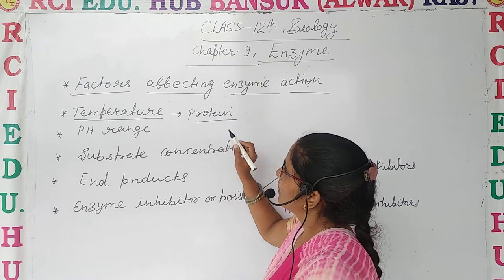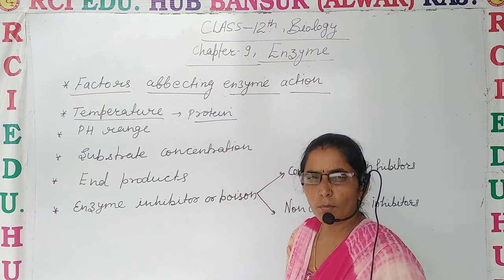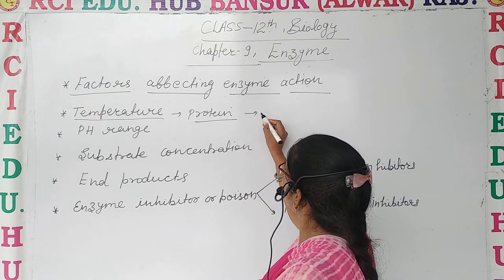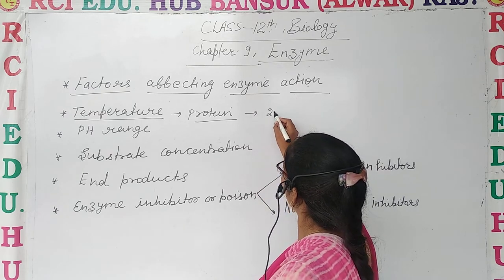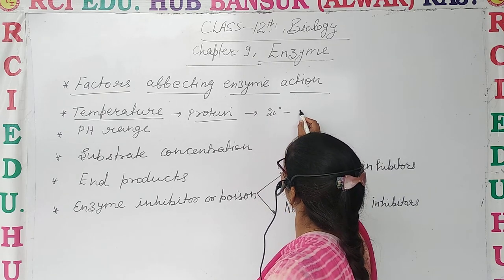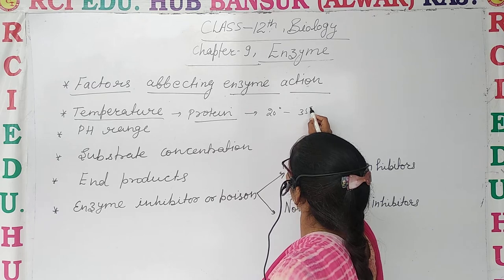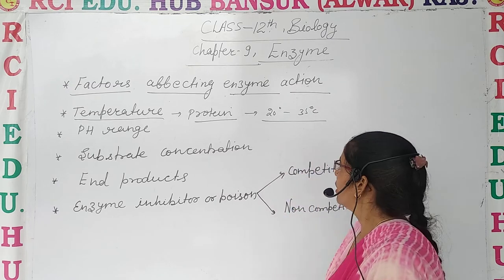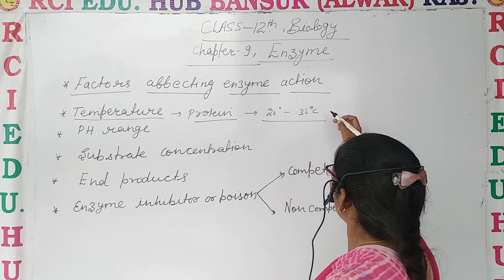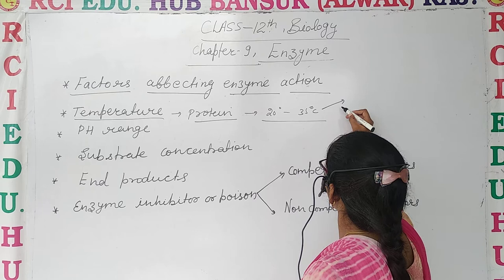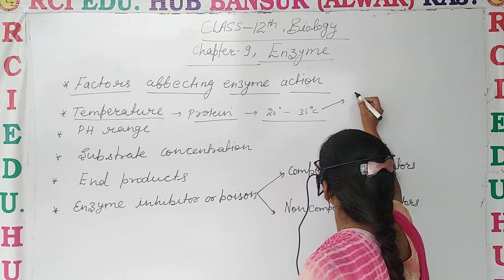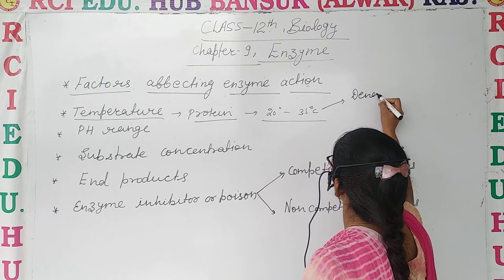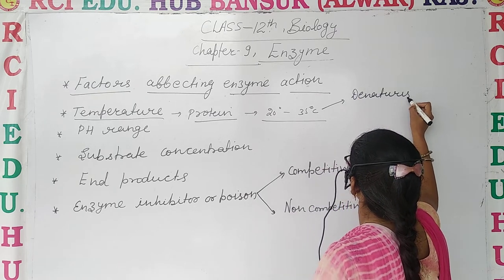Enzymes are highly sensitive to temperature as they are proteinous in nature — they consist of proteins. They perform their optimum activity at the range of 20 degrees to 35 degrees Celsius. Beyond that, if temperature increases, it causes denaturization of the enzyme.